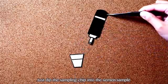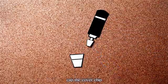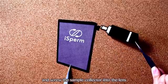Just dip the sampling chip into the semen sample, cap the cover chip, and screw the sample collector into the lens.